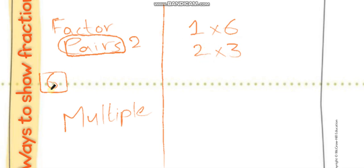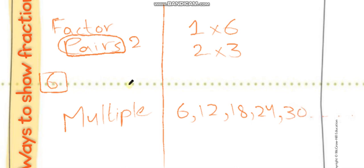Those are the only factor pairs of 6. Now if I ask you to give me the multiples of 6, it's simply the multiplication table of 6: 6 times 1 is 6, 6 times 2 is 12, then 18, 24, and so on. It depends on how many multiples the question asks for. So factor pairs are two numbers that multiply to give the same number, and multiples are just the multiplication table of that number.